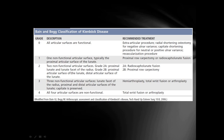Stage 2 has two non-functional articular surfaces divided into Grade 2A — proximal lunate and lunate facet of the radius — and Grade 2B — proximal and distal articular surfaces of the lunate. Stage 3 has three non-functional surfaces: lunate facet of the radius, proximal and distal articular surfaces of the lunate, while the capitate is preserved. In Stage 4, all four articular surfaces are non-functional, including the articular surface of the capitate.